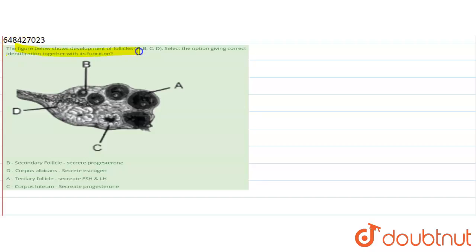The figure below shows the development of follicle A, B, C, D. Select the option giving correct identification together with its function. So here this is the given diagram and we have to tell if this labeling is correct or not.